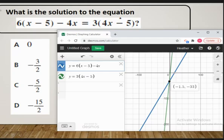Your answer choices, though, are given to you in fraction form. Remember, we just need to change those fractions to a decimal so that we can compare, which our answer is negative 1.5, because remember this is your X value, this is your Y value.